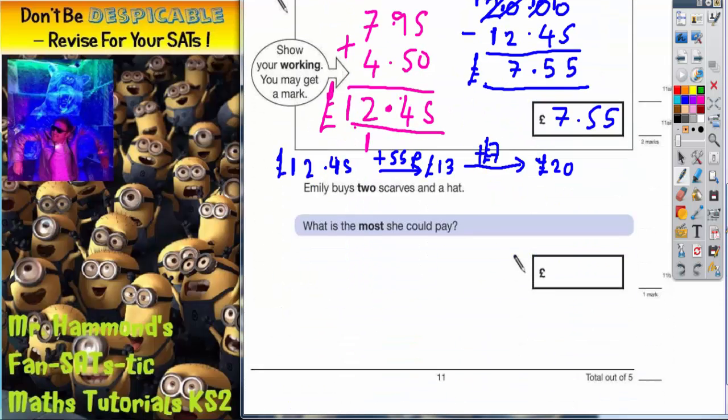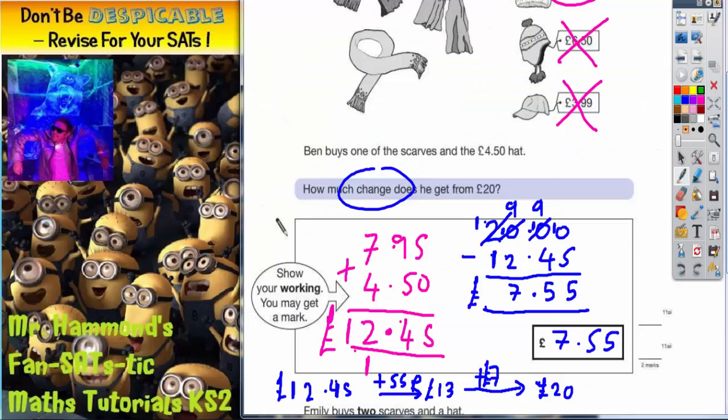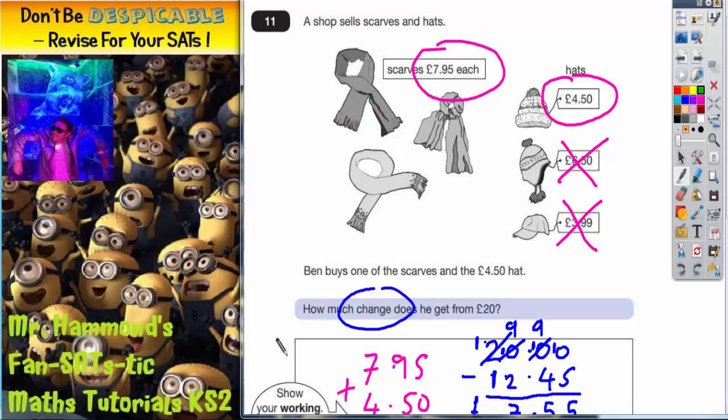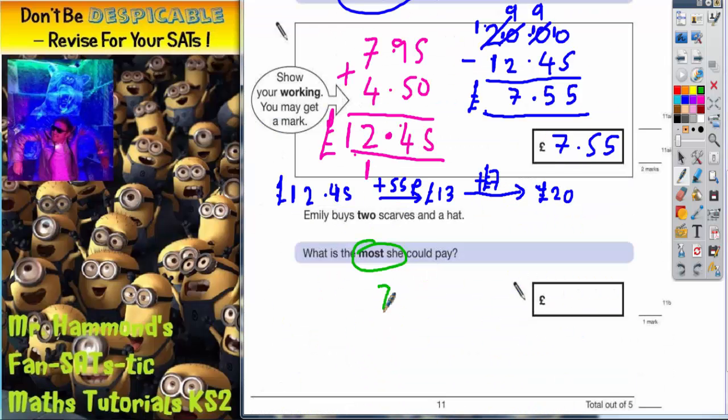If we scroll down, we'll see what we've got to do next. Emily buys 2 scarves and a hat. What is the most she could pay? Well, we've already said that the scarves are £7.95, whichever one she buys. So she's going to be having 2 of those. So £7.95 plus £7.95.